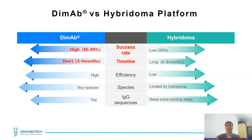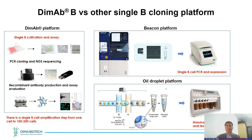Comparing to the traditional hybridoma platform, DMAp has two major advantages. First, a high success rate — based on our experience with more than 300 therapeutic targets and thousands of molecules, our success rate is more than 90%. Second, our development time is much shorter — only half that of hybridoma, requiring only three to four months including immunization time.